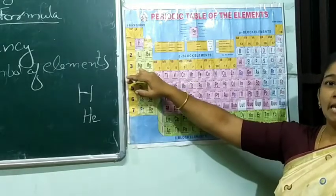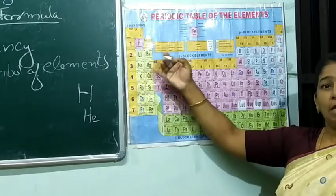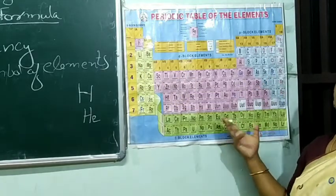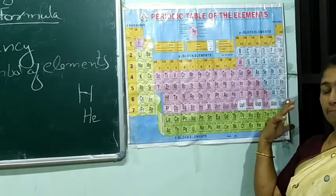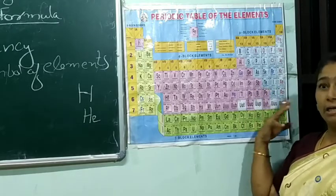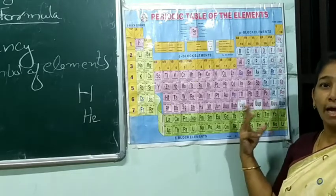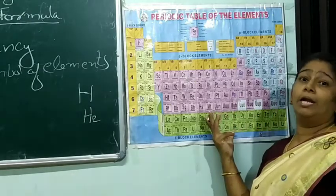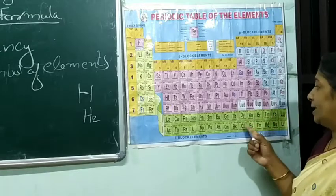For example, sodium gets Na from its Latin word, that is 'natrium.' Then potassium gets K from its Latin word, that is 'kalium.' Some are based upon color, some are based upon their country. We can remember our scientist Madame Curie. Madame Curie discovered one element — polonium — while she was working with the uranium ore, that is pitchblende. She got another radioactive element and, in order to honor her motherland Poland, she gave the name polonium.